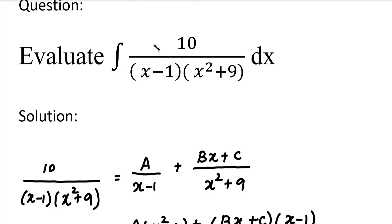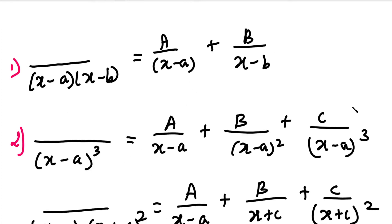First, we consider the types of partial fraction problems. In the partial fraction method, we have three types of problems. The first type is when the denominator has a linear factor — that is, the power is 1. For example, (x minus a) to the power 1, (x minus b) to the power 1.